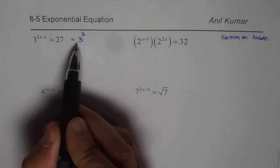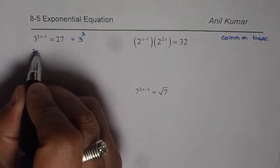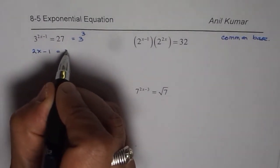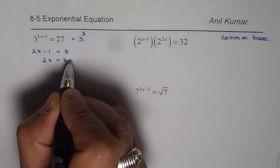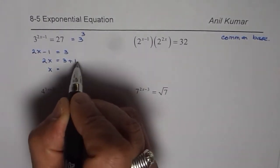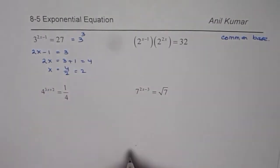Once we find a common base, we can compare the exponents. So exponents are 2x minus 1 equals to 3. Now we can solve for x. So we have 2x equals to 3 plus 1 or x is equal to 4 divided by 2, which is 2. So that is how we can solve them.